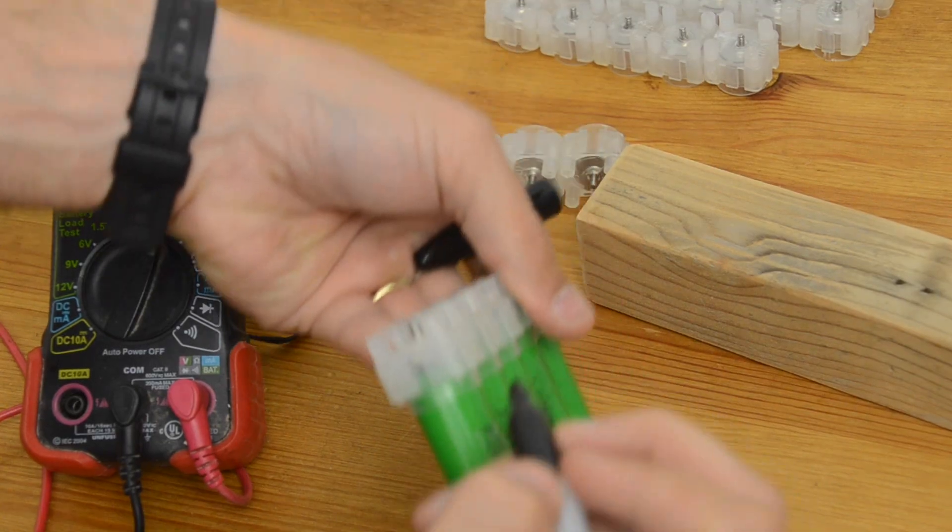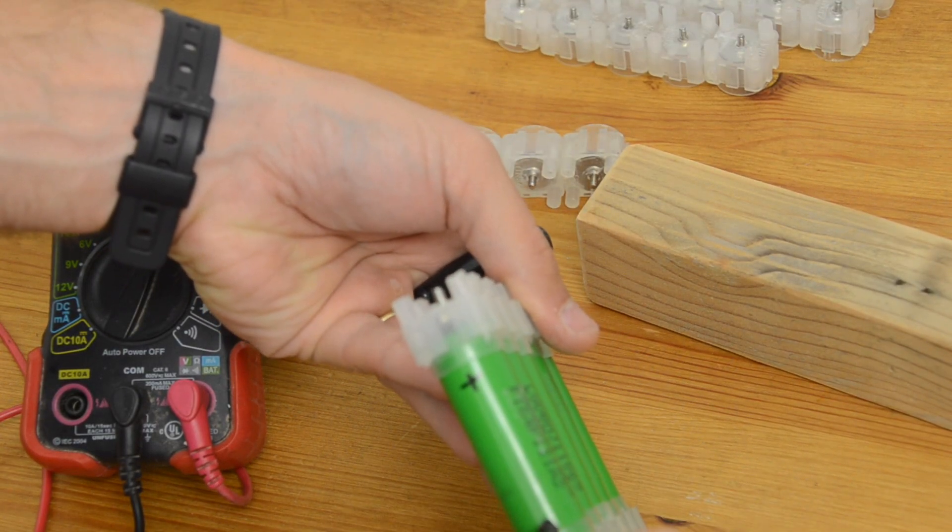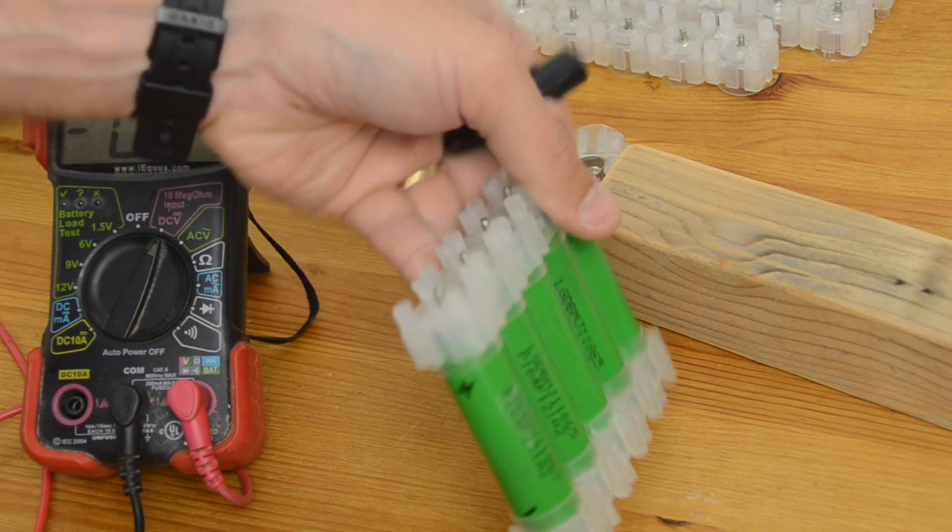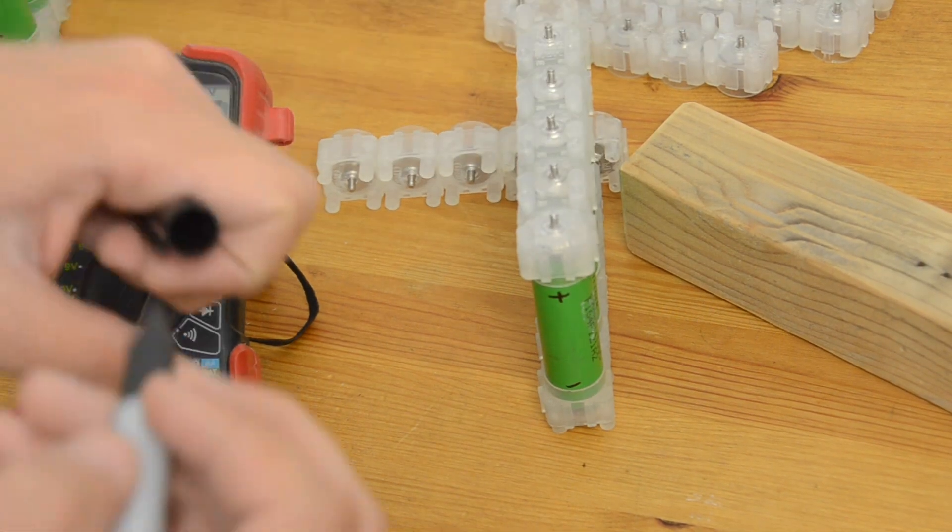The last thing I'm going to do is I'm just going to write positive and negative on the ends of these cells. It would be a good idea to do this before you put the cells in there actually. Just to make sure you don't get mixed up.